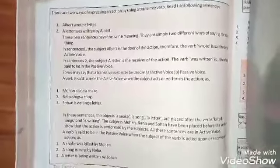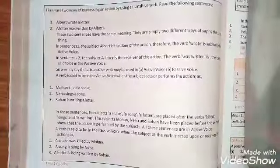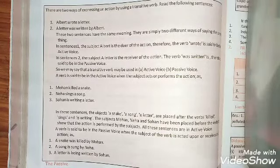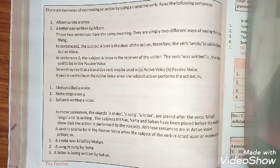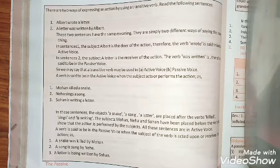Action means verb, by using a transitive verb. Transitive verb means a verb with an object — a verb that needs an object to complete its meaning. So if there is a sentence with any activity or action and it is followed by a transitive verb, that action is expressed through the transitive verb. There are two important ways of expressing an action by using a transitive verb.